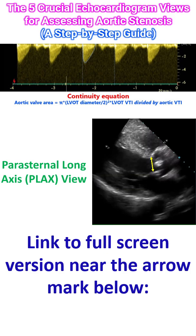The LVOT diameter is measured in mid-systole from the inner to inner edge of the septal endocardium to the anterior mitral leaflet, usually 0.5 to 1 cm proximal to the valve. A small error in this diameter is squared in the area formula, so take multiple measurements to ensure accuracy. Some have recommended measurement at the annulus rather than 0.5 to 1 cm proximal to the valve.